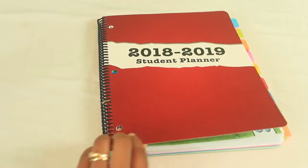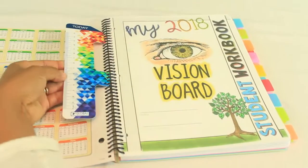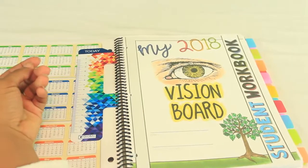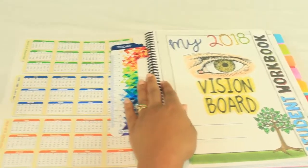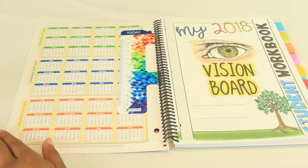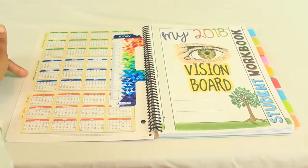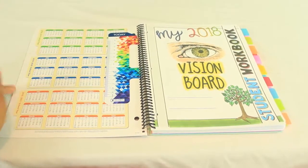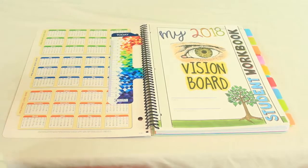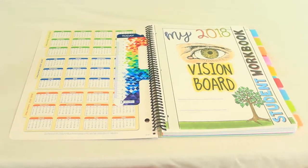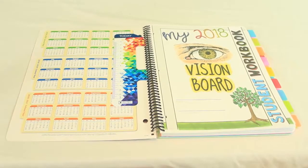So I'm going to open it up and walk through with you. So it comes with this divider separator, and then of course you get the year at a glance for 2018-19, 2019-20, and 2020-2021.